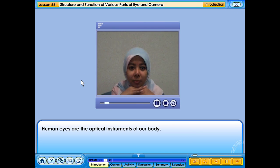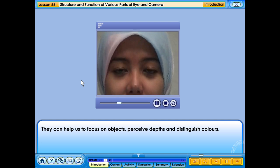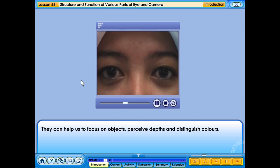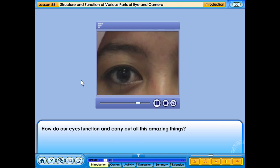Human eyes are the optical instruments of our body. They can help us to focus on objects, perceive depths and distinguish colours. How do our eyes function and carry out all these amazing things?